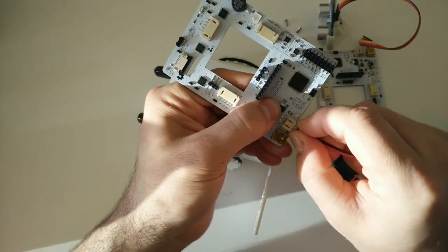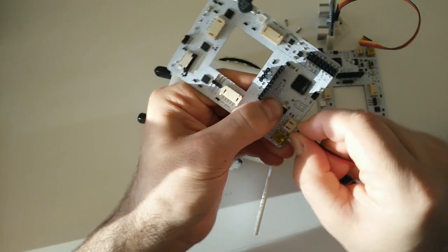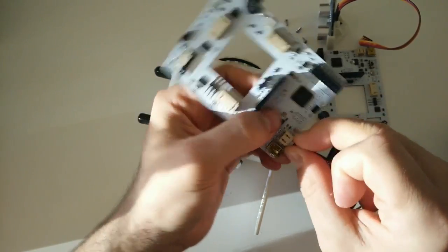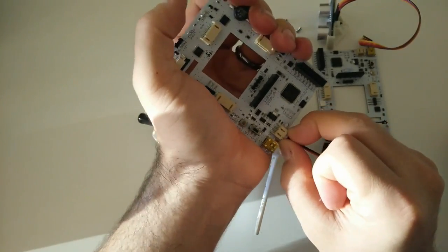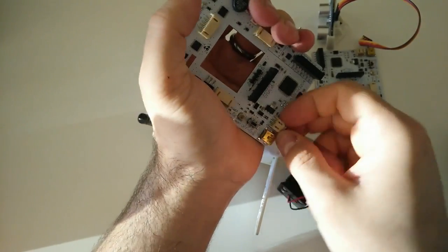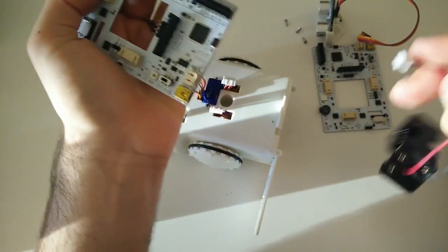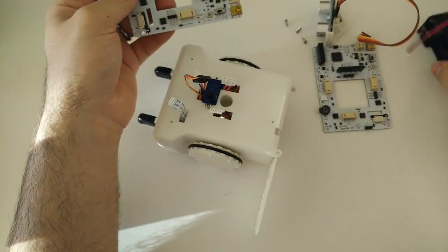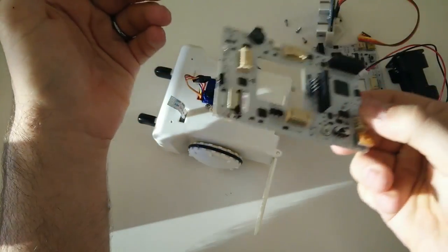Instead use the same wiggling motion used with the other connectors at the base of the connector. If you're finding it a little tough, don't worry. Just keep wiggling it and it'll come right off. And the board is now free, so we're going to put it aside.